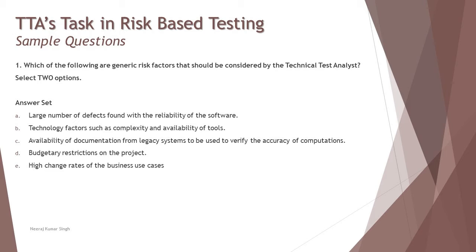A critical point about multiple-select questions: even if one selected option is wrong, the entire answer is considered wrong. For example, if you are asked to select three options and two of your three selections are right but one is wrong, you get zero for that question. There are no negative marks, but you must be completely correct to receive full marks — no partial scoring.